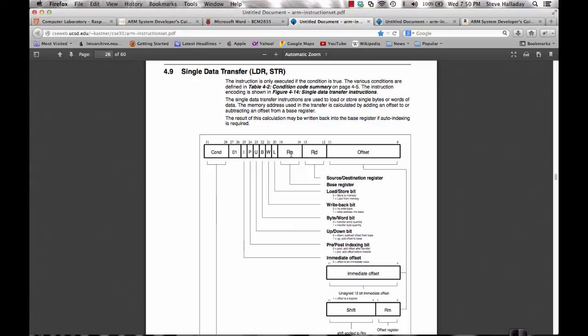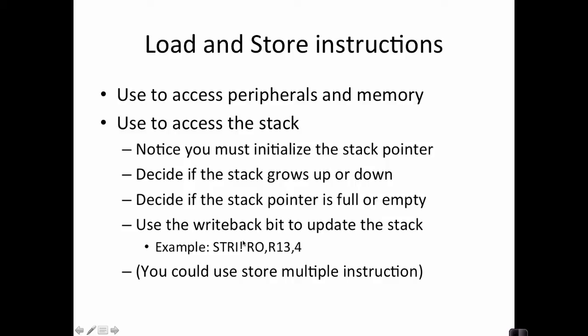And one of the conventions that ARM uses for the write-back bit is this exclamation mark. So this would be store immediate with write-back, the value that's in R0 to the base address pointed to by R13 plus 4. And then when you're all done, take that calculated address and update R13 with it. Also, there's actually a store multiple instruction, which will store multiple registers all in one instruction for you. You may want to investigate that in your ARM instruction manual.